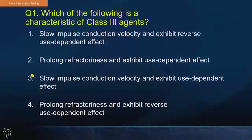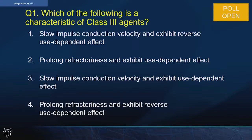Let's move to our pre-test questions for our next presentation. Which of the following is a characteristic of a class 3 antiarrhythmic? Do they slow impulse conduction velocity and exhibit reverse use-dependent effect? Do they prolong refractoriness and exhibit use-dependent effect? Do they slow impulse conduction velocity and exhibit use-dependent effect? Or do they prolong refractoriness and exhibit reverse use-dependent effect?